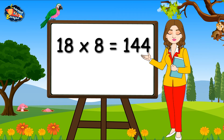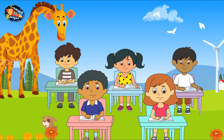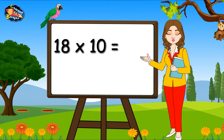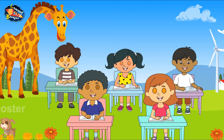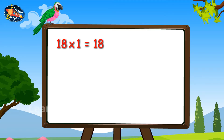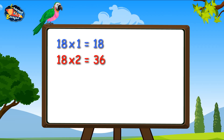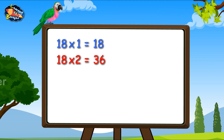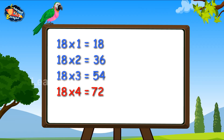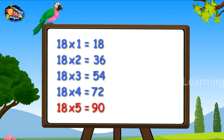18 8s are 144. 18 9s are 162. 18 10s are 180. 18 ones are 18. 18 twos are 36. 18 threes are 54.